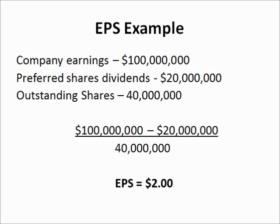What you want, as an investor, is to always have the earnings per share grow. That means there is long-term sustainable business and long-term sustainable growth, and what is even more important is that it is steady — because that means earnings are predictable, the business is predictable, and therefore you can make a more sound investment decision.